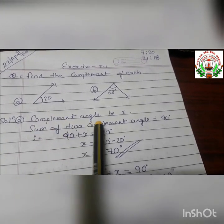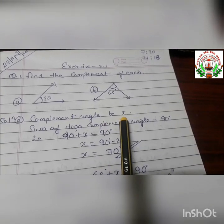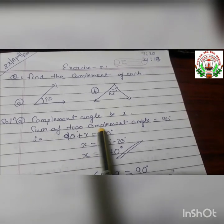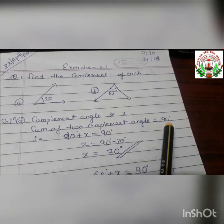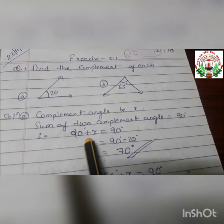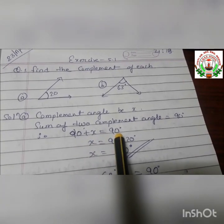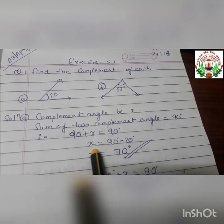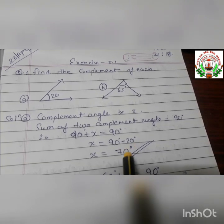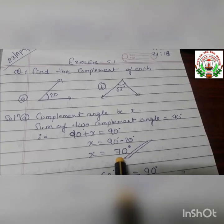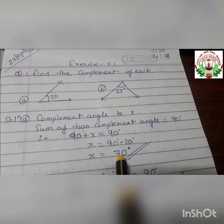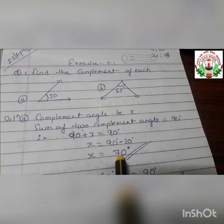The second complement angle we are going to consider as X. As we know, the sum of the two complementary angles is equal to 90 degrees. So 20 plus X equals 90 degrees, meaning X equals 90 minus 20, which is 70 degrees. So 70 degrees is the second complementary angle.